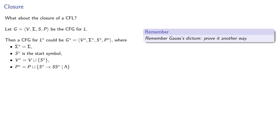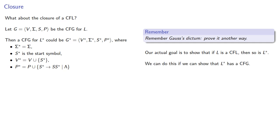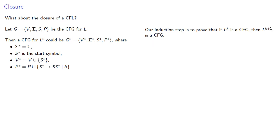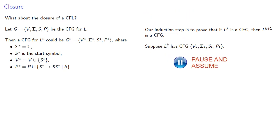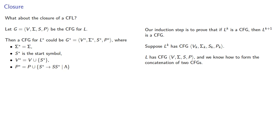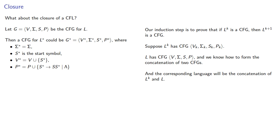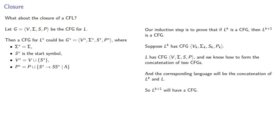Now let's prove it another way, following Gauss's dictum. Our actual goal is to show that if we have a context-free language, its closure is also context-free. We can do this by showing L* has a context-free grammar. L has a context-free grammar, which is our base step. The induction step is to prove that if Lᵏ has a context-free grammar, then Lᵏ⁺¹ does too. Since Lᵏ has a CFG and L has a CFG, and we know how to form the concatenation of two context-free grammars — at least once the homework is done — the concatenation Lᵏ·L gives Lᵏ⁺¹, which is therefore context-free.